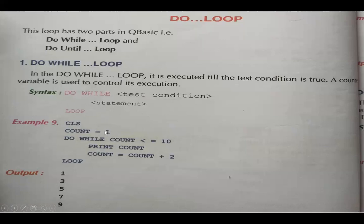Here we want to print counting from 1 to 10. Last time in the for loop we wrote it together as 1, 2, 10. But in the do while loop these two parts will be separate — the starting value is set with a variable like count.